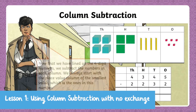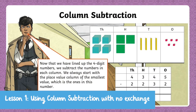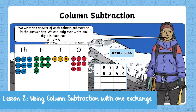Now that we have lined up the four-digit numbers, we subtract the numbers in each column. We always start with the place value column of the smallest values, so 8 subtract 4 equals 4. We then write this in the answer box in the ones column.